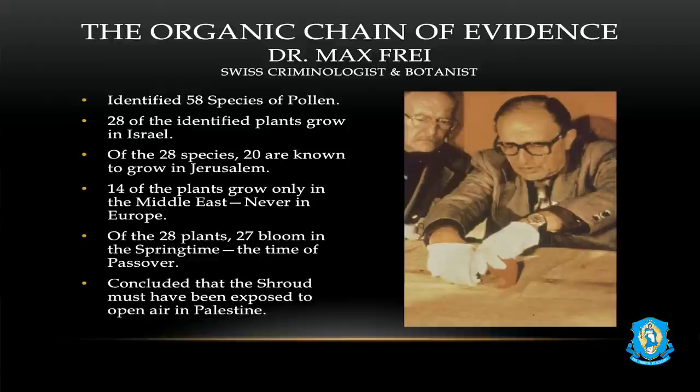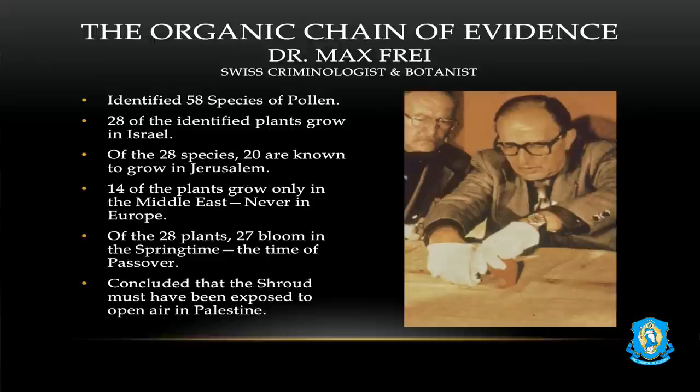The next slide is what we're going to prove, which I think is fascinating: the organic chain of evidence by Dr. Max Frei that shows the shroud can be traced back to first-century Palestine. He is a Swiss criminologist and also a botanist. On the shroud he identified 58 species of pollen, which comes from plants. 28 of the identified plants grow in Israel.